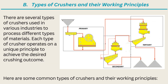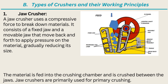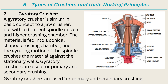Types of Crushers and Their Working Principles. There are several types of crushers used in various industries to process different types of materials. Each type of crusher operates on a unique principle to achieve the desired crushing outcome. 1. Jaw Crusher. A jaw crusher uses a compressive force to break down materials. It consists of a fixed jaw and a movable jaw that move back and forth to apply pressure on the material, gradually reducing its size. The material is fed into the crushing chamber and is crushed between the jaws. Jaw crushers are primarily used for primary crushing.